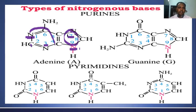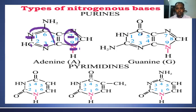In adenine, position number six has one amino group. But in guanine, position number six contains oxygen instead of an amino group, and the second carbon contains an amino group — that is the major structural difference between adenine and guanine. So these two bases come under purine bases.